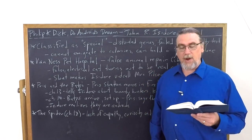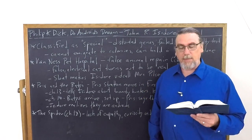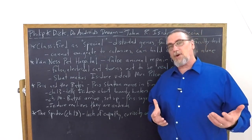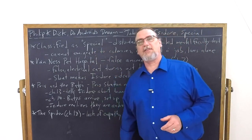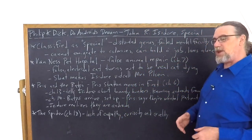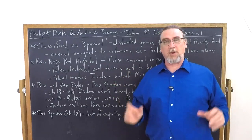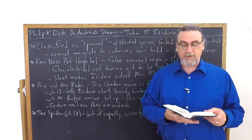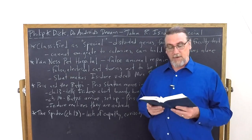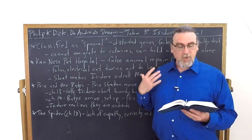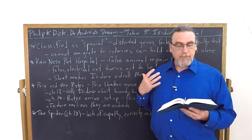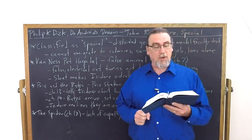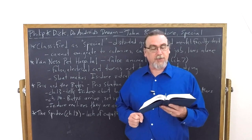John Isidore, being yammered at by the television set in his living room as he shaved in the bathroom, was one of these. So we're learning a lot already. Isidore himself has been classified as a special, which means that he's got distorted genes. He's not supposed to breed. He's not supposed to go off world, and things are a little bit worse for him in that he has recently failed a very important test.